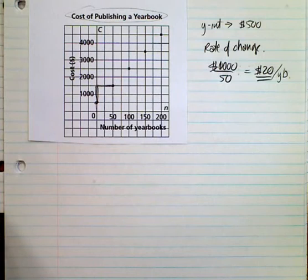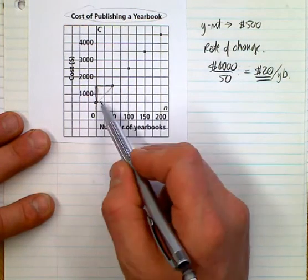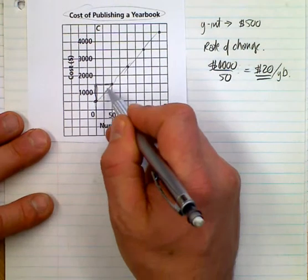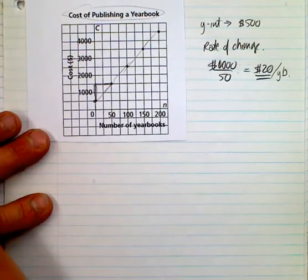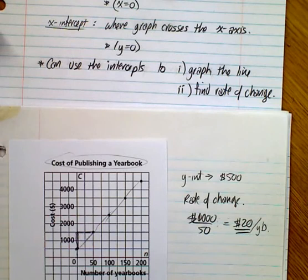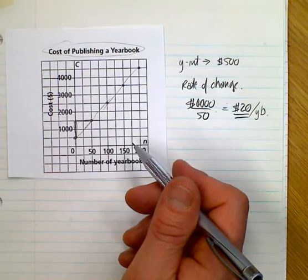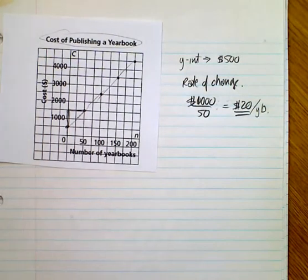We've looked at the y-intercept and the rate of change. Are these values discrete or continuous? You can have numbers in between, but can you draw a solid line? That would assume you can have half a yearbook or a quarter of a yearbook. So in this case, you have to think logically — you can't draw a solid line because you can't have half a yearbook. This would indeed be discrete data. We found the rate of change, and in this case you don't have an x-intercept. I hope that gave you an idea of how to interpret some of these graphs. If you have any questions, please don't hesitate to ask me in class.